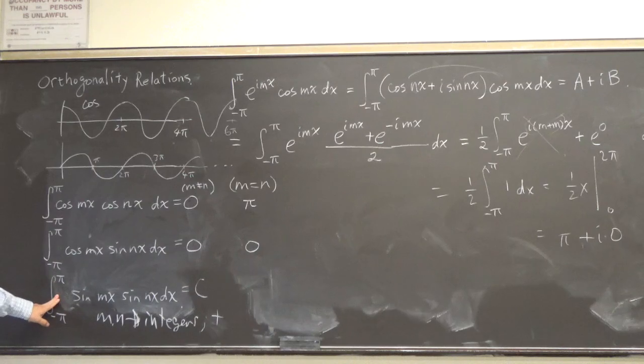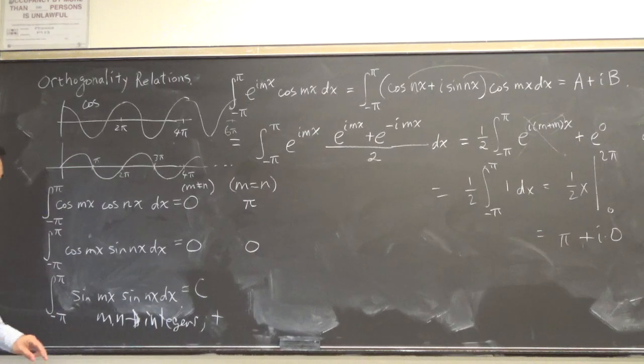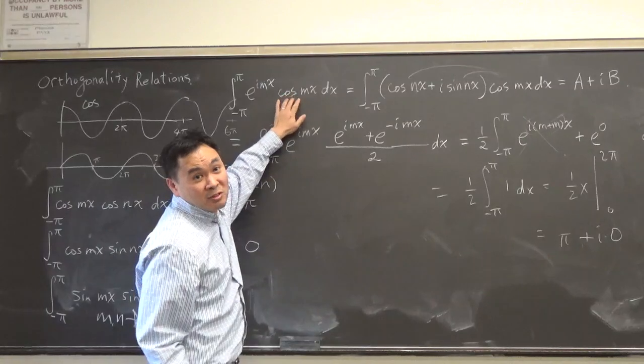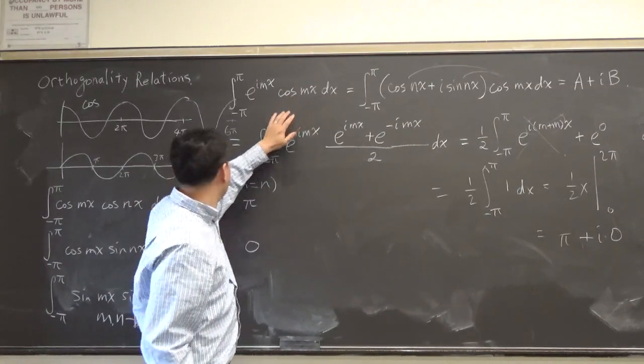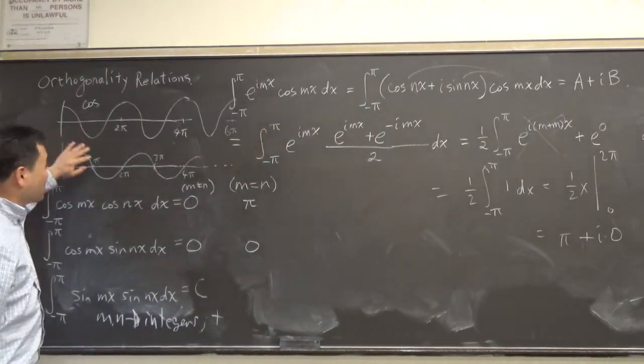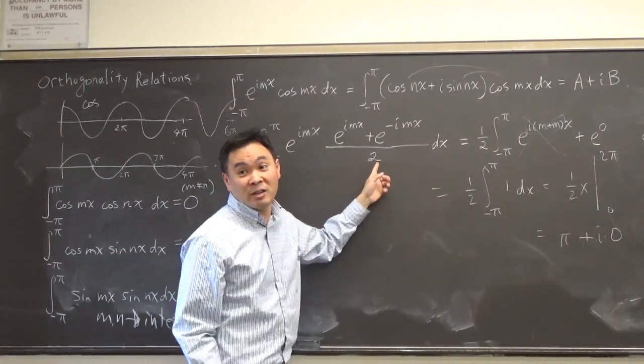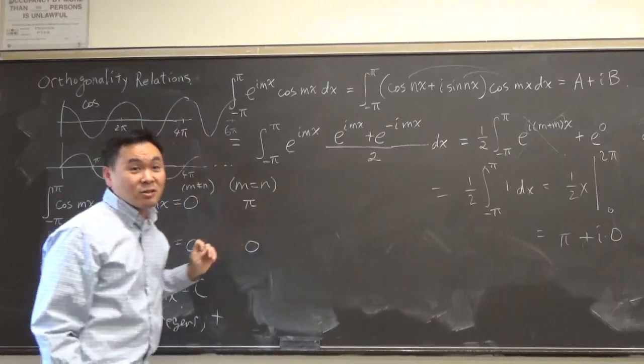And this one, I want you to try using the same method. The only difference is now you're going to integrate, instead of the cosine here, you just replace this by sine mx, where I erased it, but sine mx is this minus this with 2i in the denominator. So, I'll try that one.